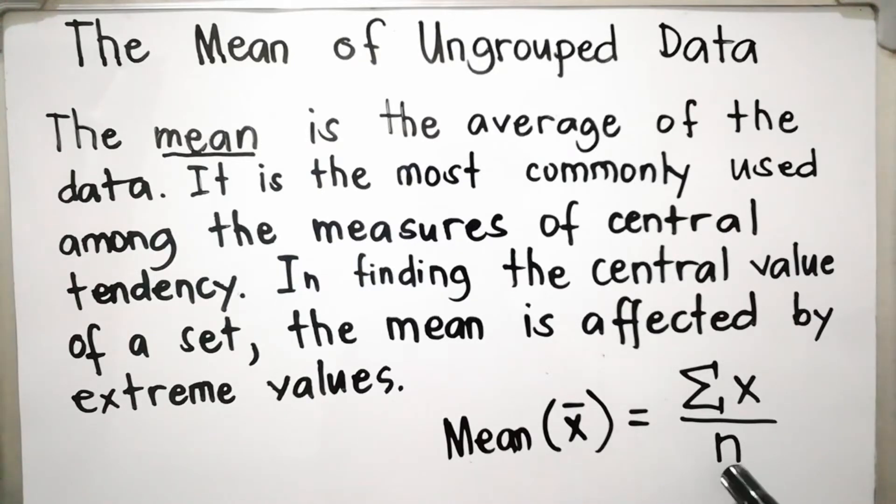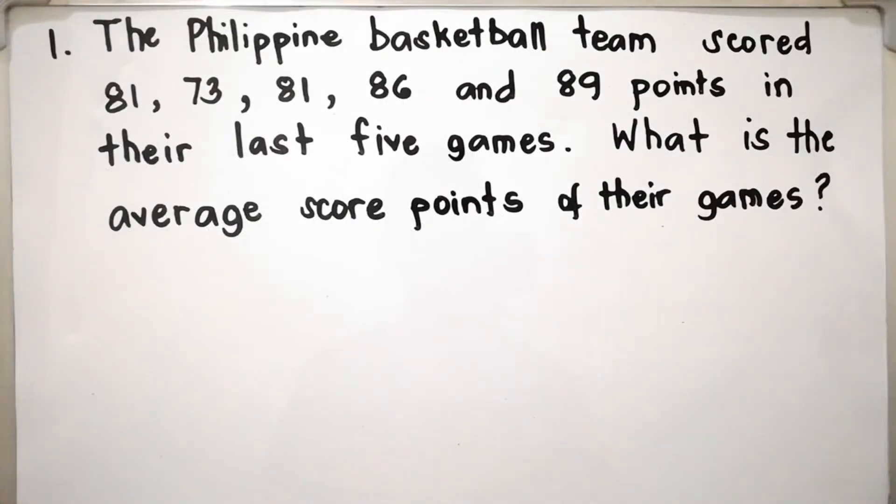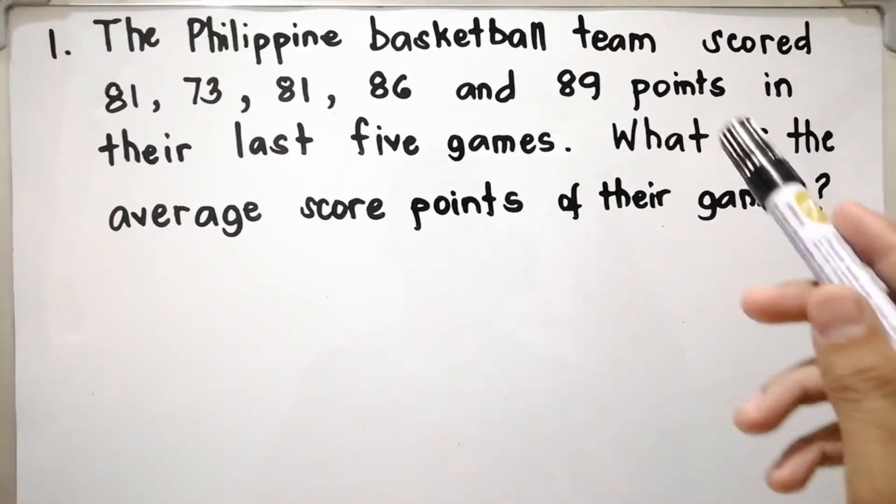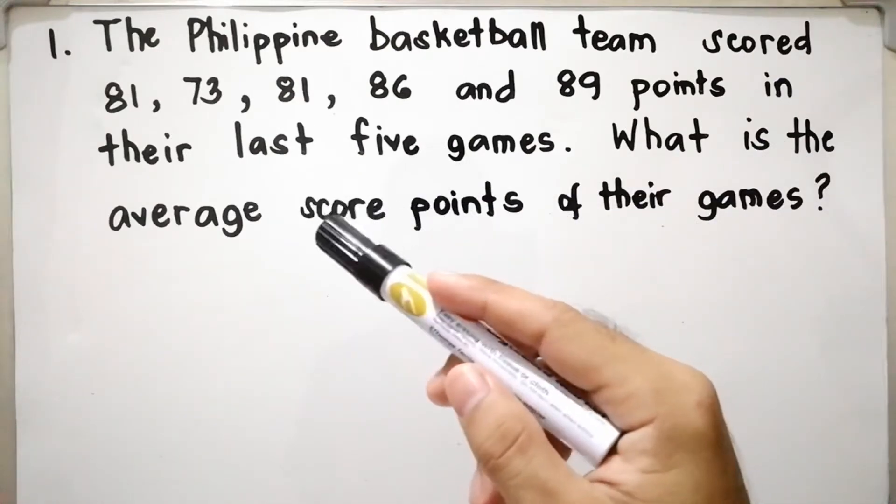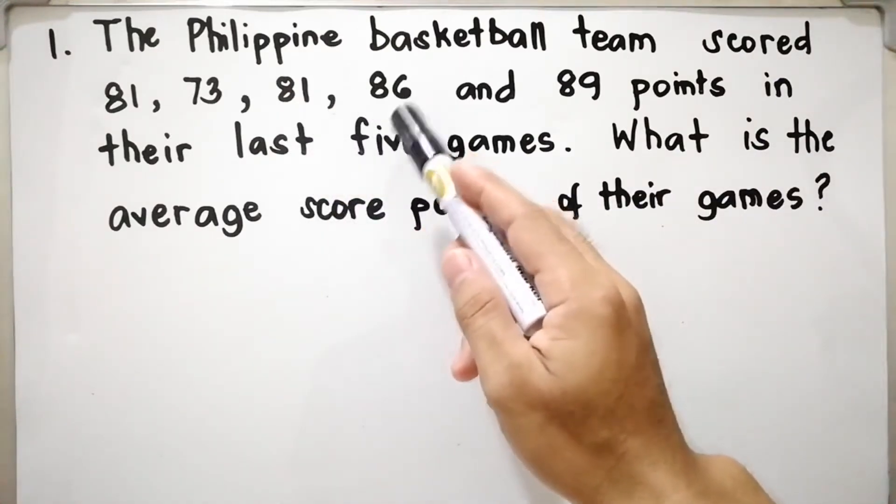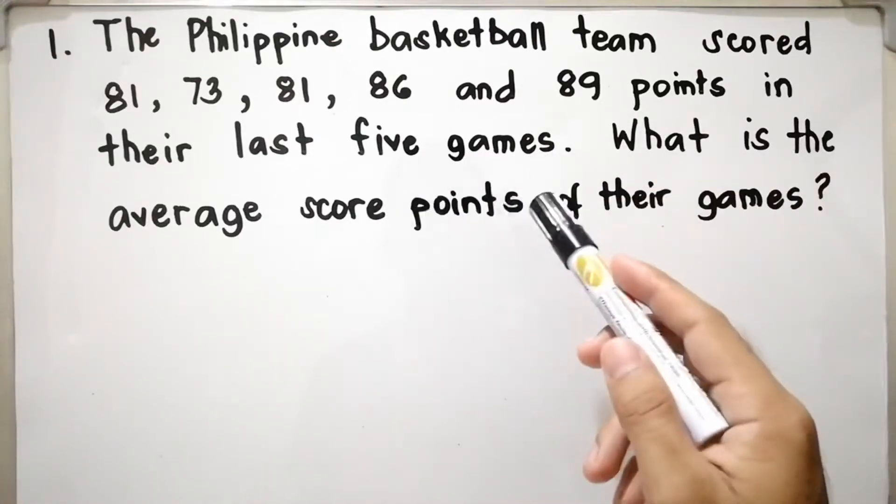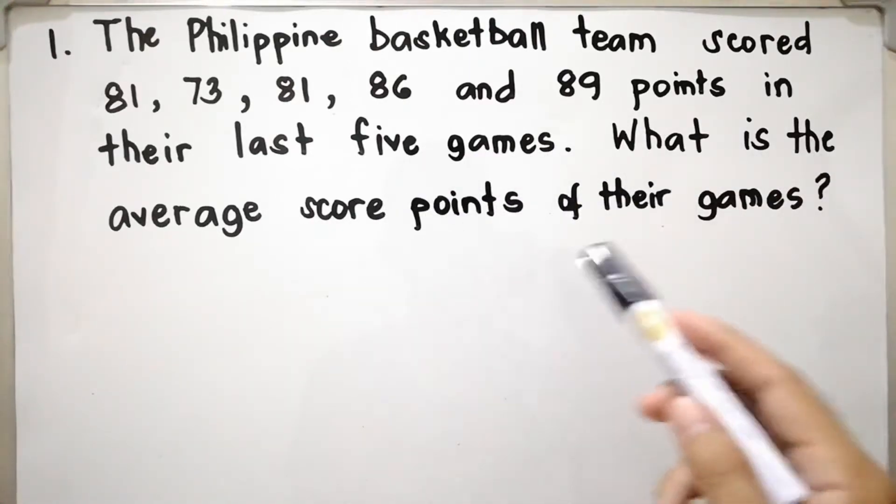n means the number of observations. Let us have example number one. The Philippine basketball team scored 81, 73, 81, 86, and 89 points in their last five games. What is the average score points of their games?